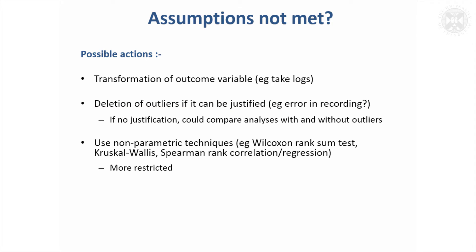And then, of course, if you can't transform the data to be normal and can't justify getting rid of any outliers, you might have to resort to non-parametric techniques. We looked at some of those last time: the Wilcoxon rank sum test for comparing two groups of non-normal data; Kruskal-Wallis, which is the equivalent of analysis of variance for non-normal data; and the Spearman rank correlation coefficient or regression, which can be used if you've got two continuous measurements where at least one of them is non-normal.